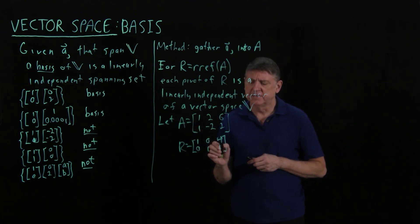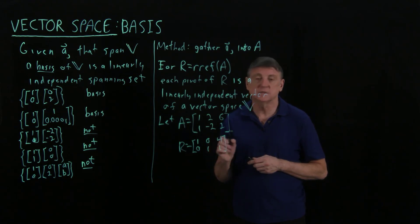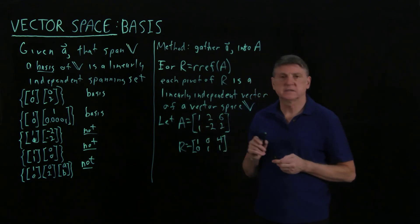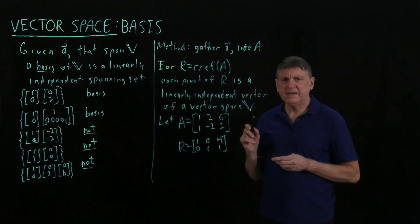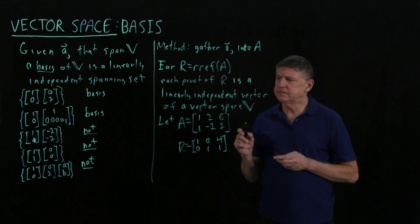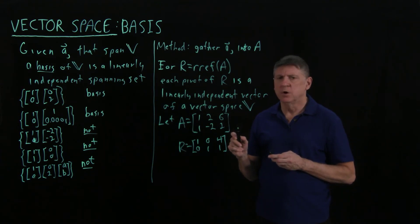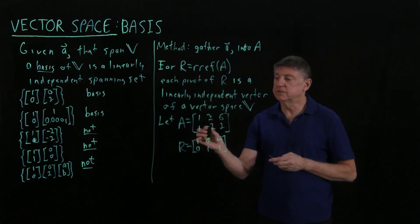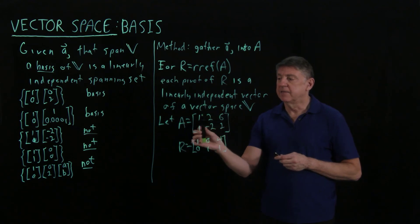We'll note in passing that we can calculate the null space from this, from these values. So this is an algorithm or a method that we can use to find a basis for the vector space. Now, what is that vector space?